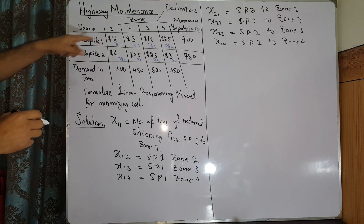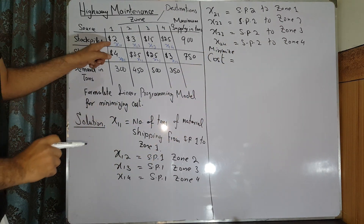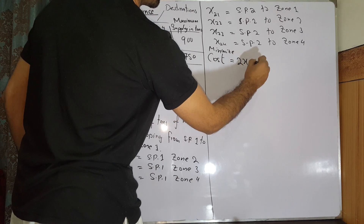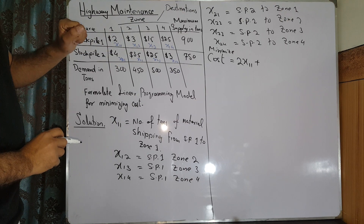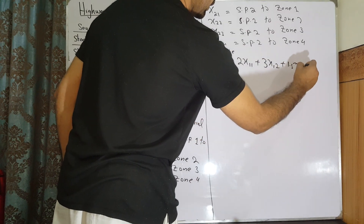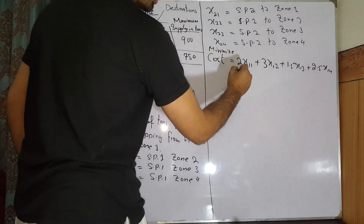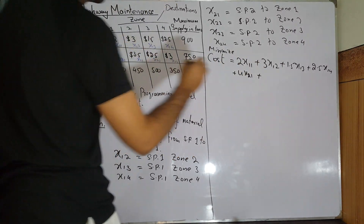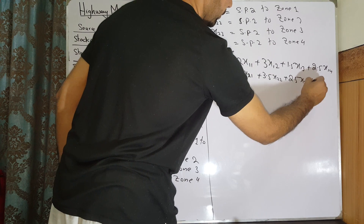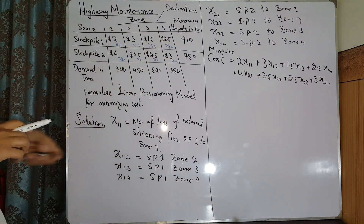Now, the total cost which we have to minimize is: 2·x11 + 3·x12 + 1.5·x13 + 2.5·x14 + 4·x21 + 3.5·x22 + 2.5·x23 + 3·x24. This is your cost function, and we need to minimize this total cost.